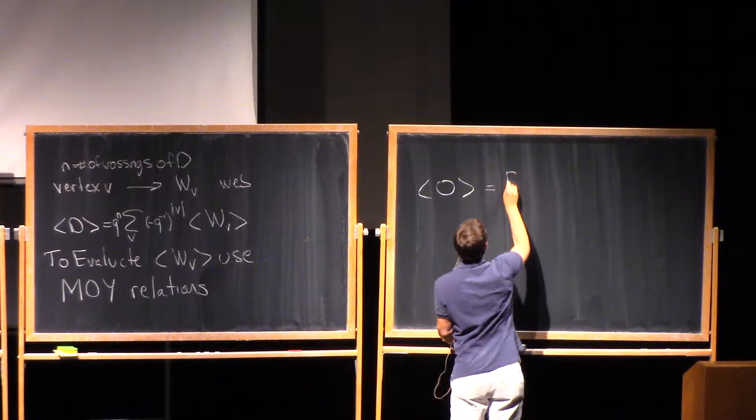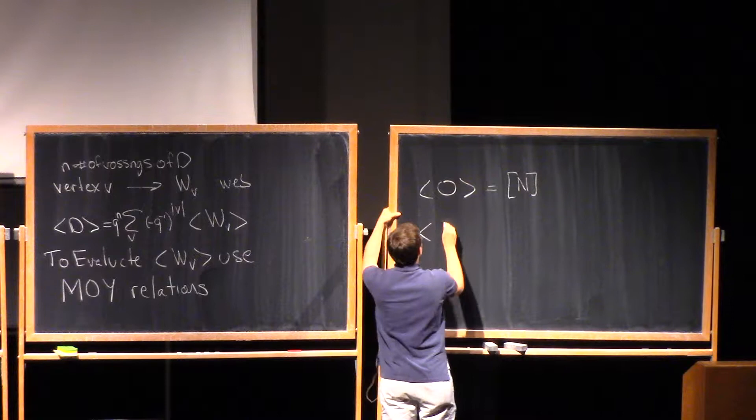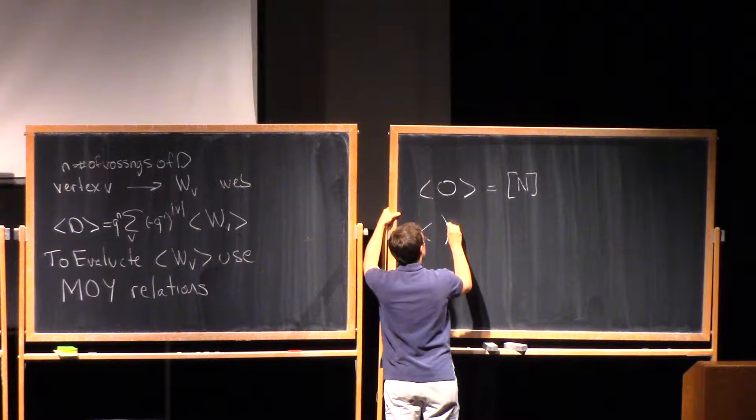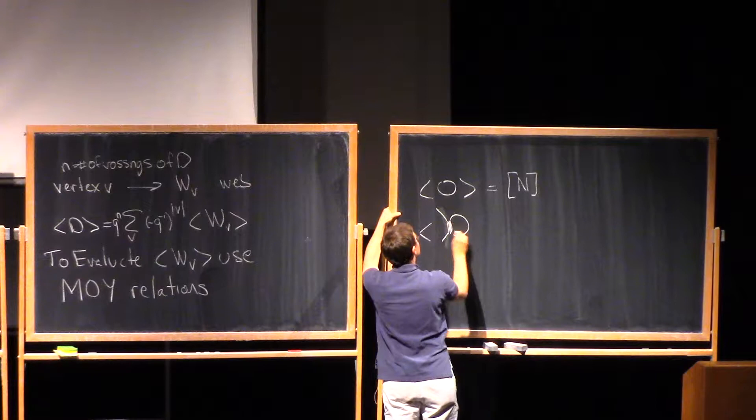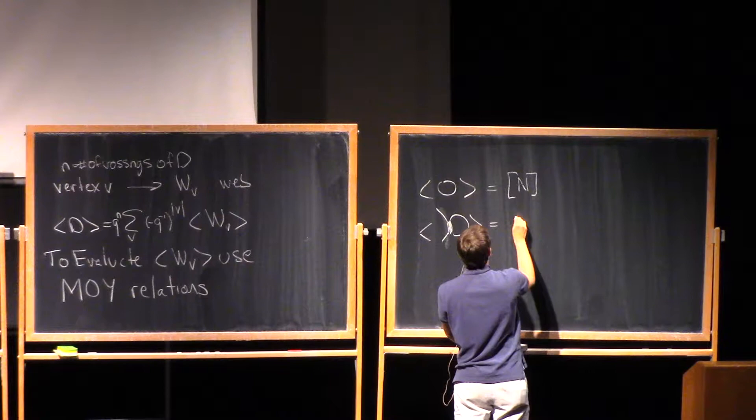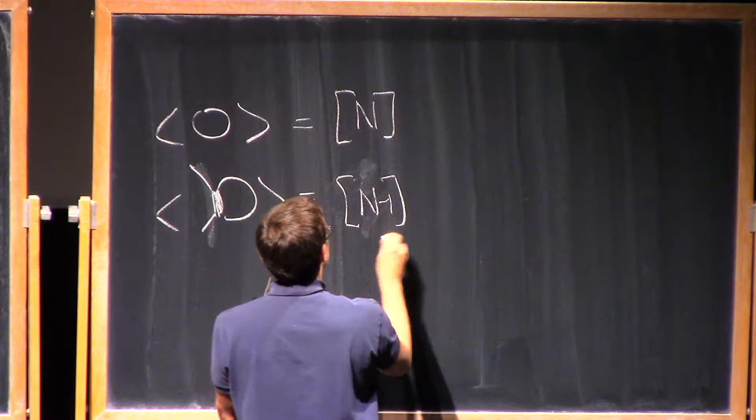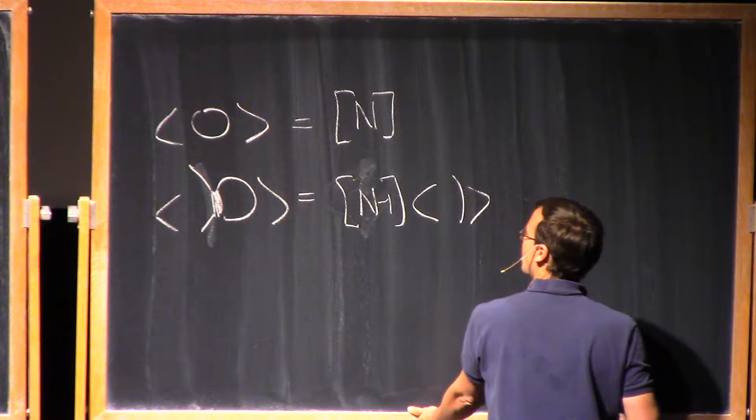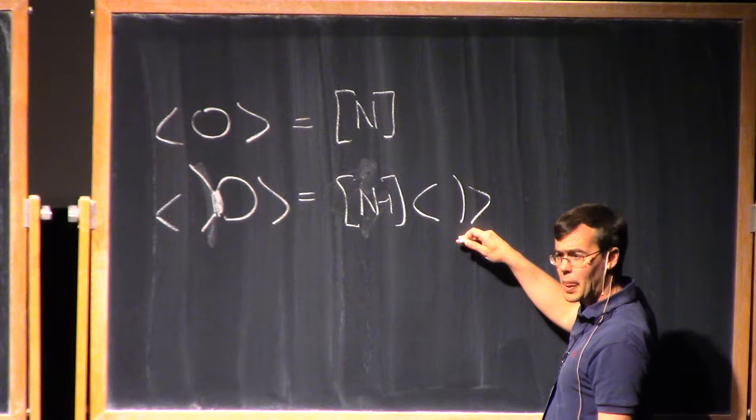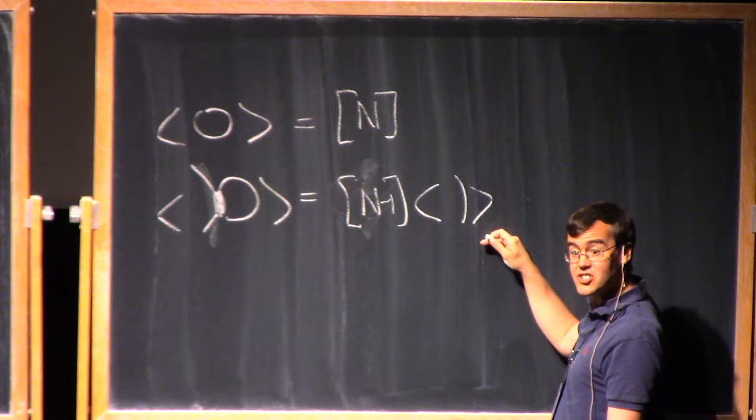To evaluate bracket of WV we use what are called the MOI, that's for Murakami, Atsuki, and Yamada, not Mrovka, Ushvath, and Yu, which caused me some cognitive dissonance in my youth relations. And so what are these relations? Well, they say that if I have a circle I can replace this with quantum N.